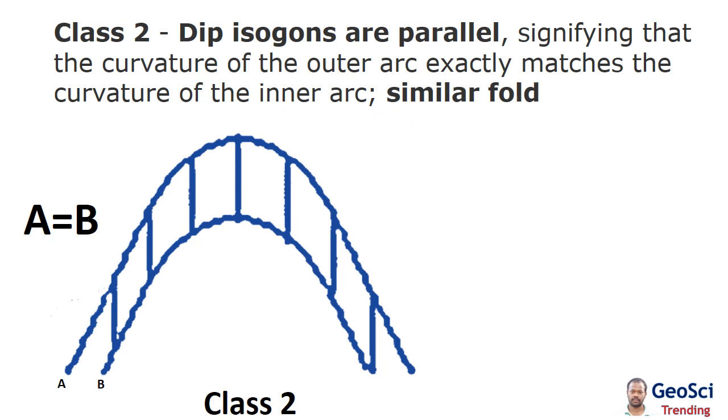Class 2: dip isogons are parallel, signifying that curvature of the outer arc exactly matches the curvature of the inner arc. This is called a similar fold. In Class 2 similar folds, there is relative thinning of the limbs and thickening of hinges. These types of folds are common in metamorphic terrains where most deformation occurs by processes that permit extensive ductile flow of the rock.